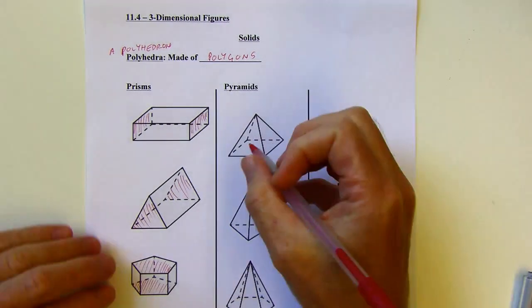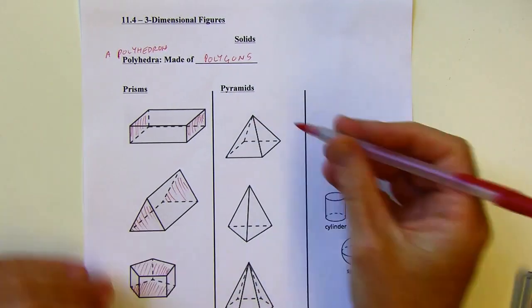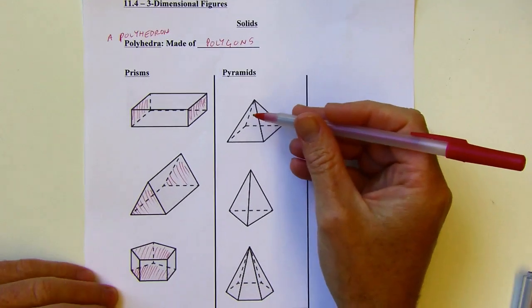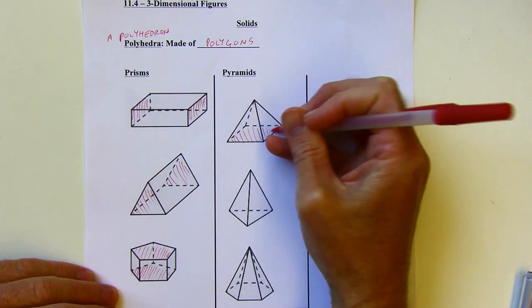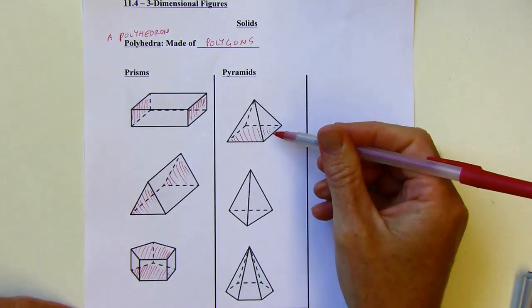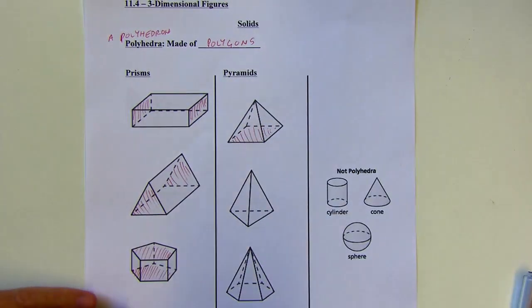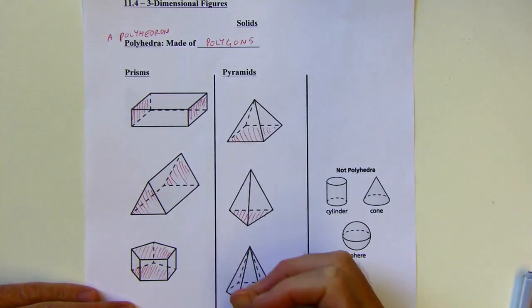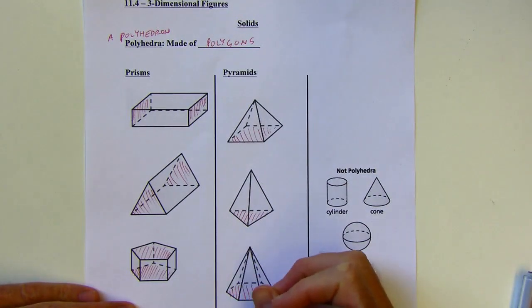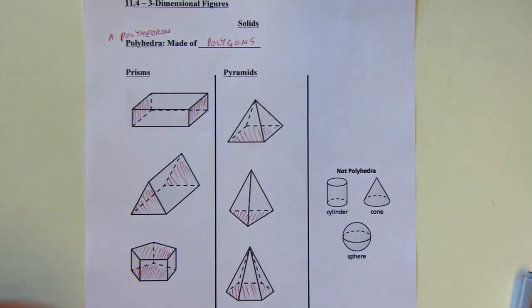If you've got a figure that comes to a point, then this is a pyramid. So these are all pyramids. We probably think of a pyramid that looks like this with a square base or maybe a rectangular base, but you can have other bases as well. So you could have a triangular base or a hexagonal base.